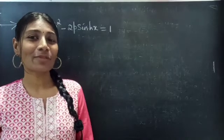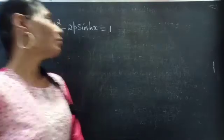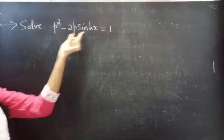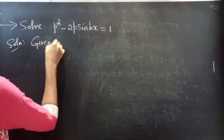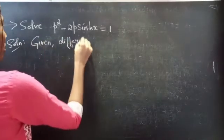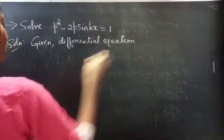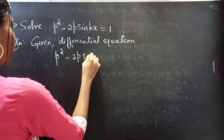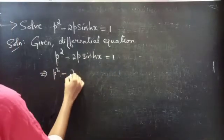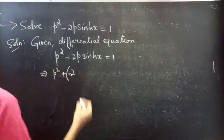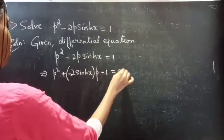Hello everyone, this is Jay Kalpana here. In this video we are going to solve a differential equation using the solve for P method. So let's get started. Problem: solve P² minus 2P·sinh(x) equals 1. Solution: Given differential equation P² minus 2P·sinh(x) equals 1, we can write this as P² minus 2·sinh(x)·P minus 1 equals 0.